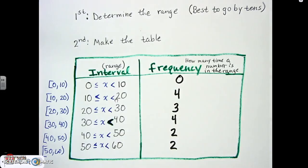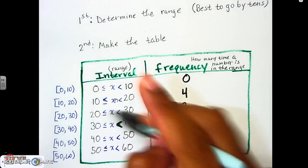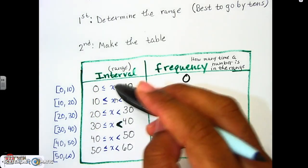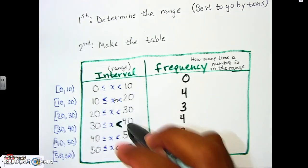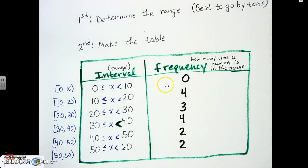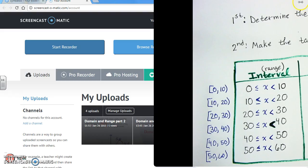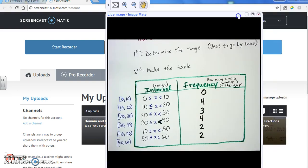If you want to use interval notation inside the table instead of inequalities, that's fine too — you can do what works best for you. Use your stem-and-leaf plot to help do your frequency distribution, and you're done.